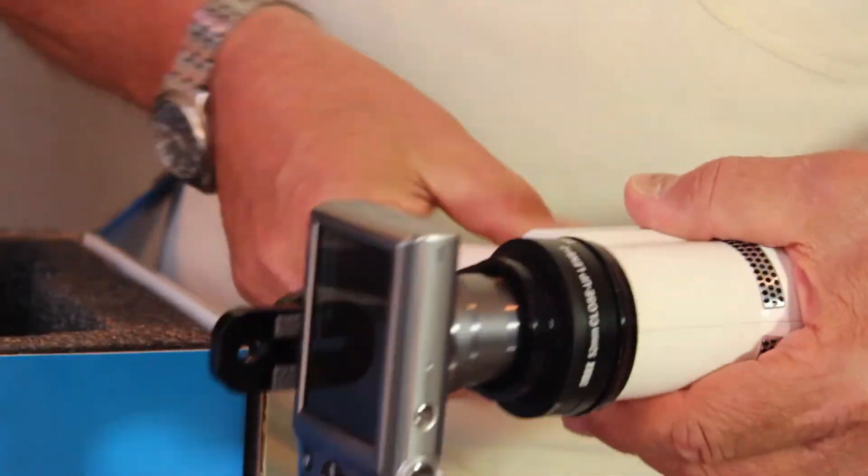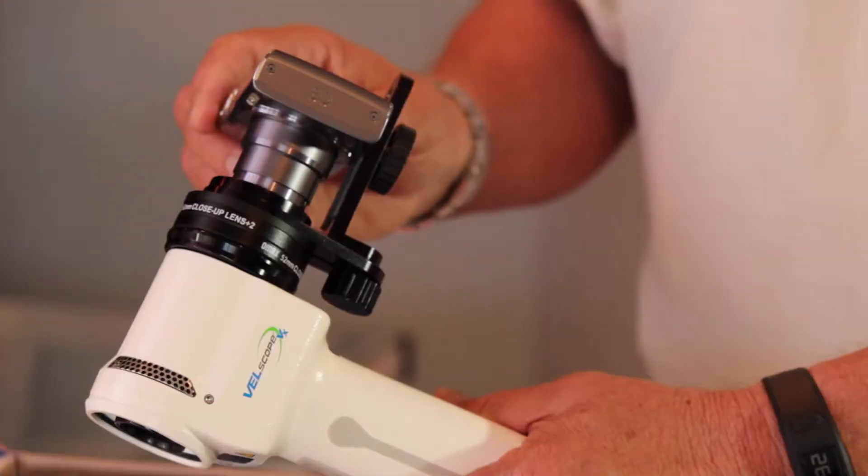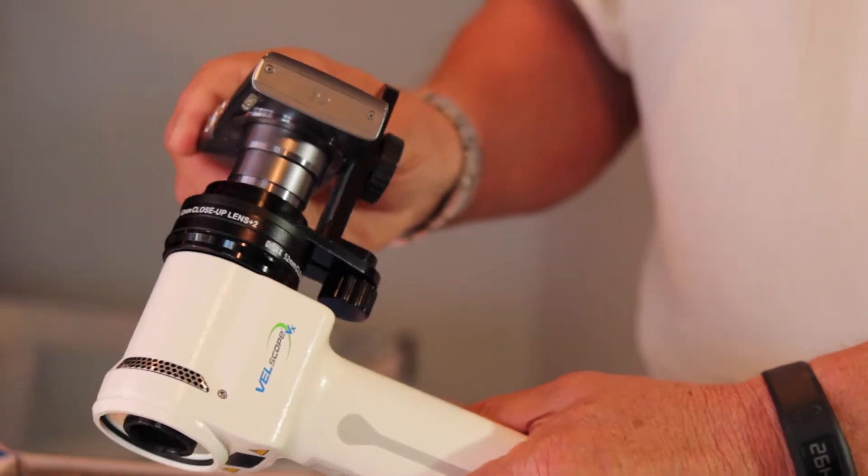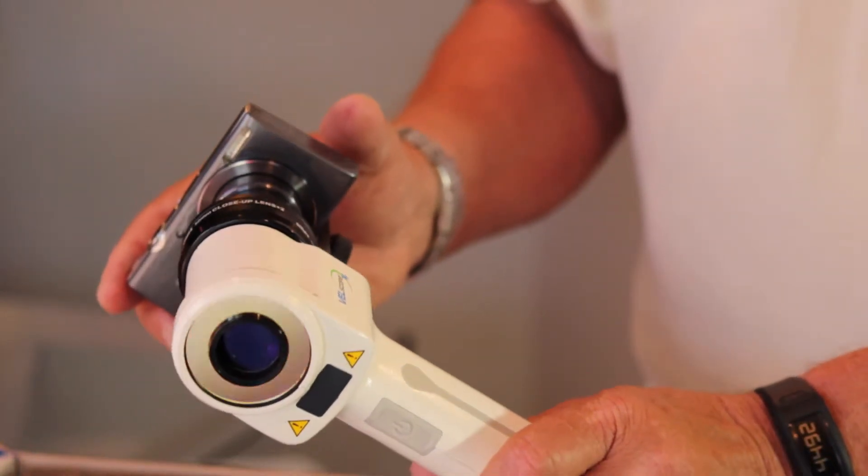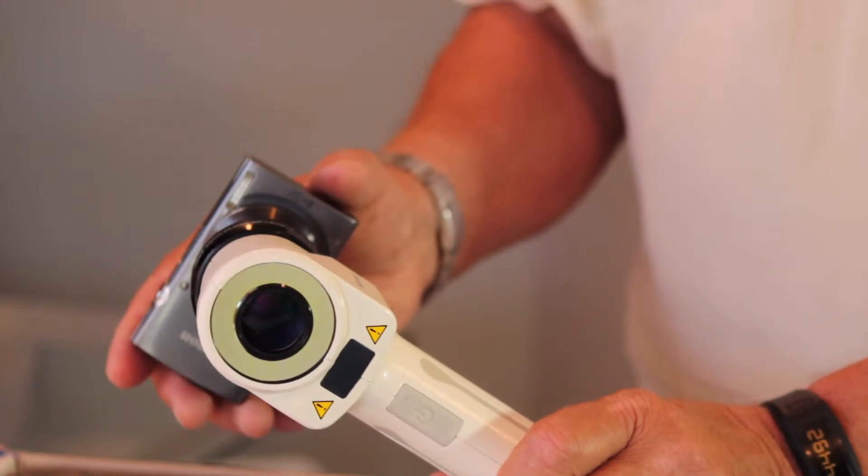You also want to make sure that it's tight there. So the end result is going to be with your camera centered into the Velscope adapter and everything is as snug as you can get it. And then at this point, you are ready to use the Velscope.